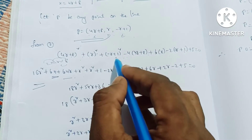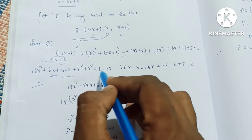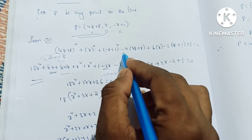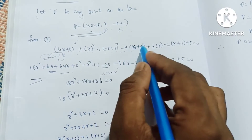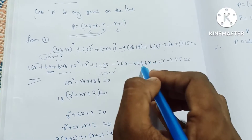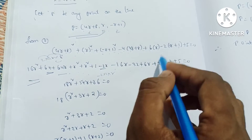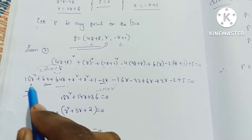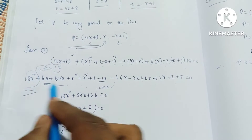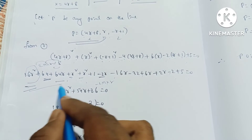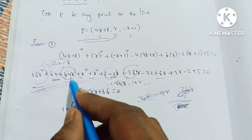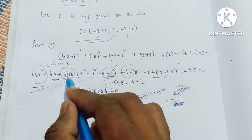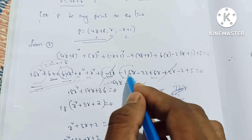r squared plus (minus r) whole square is r squared, plus 1 minus 2ab is minus 2 into 1 into r, giving minus 2r. Minus 4 into 4r is minus 16r, minus 4 into 8 is minus 32, plus 6 into r is 6r, minus into minus plus 2r.